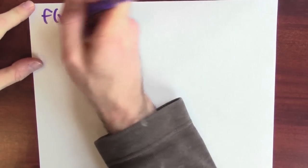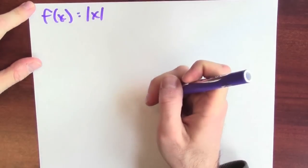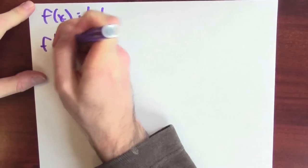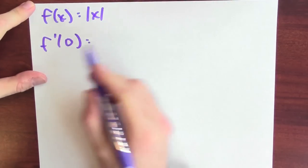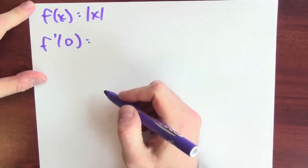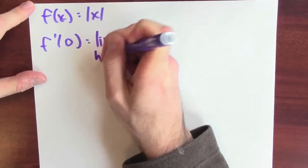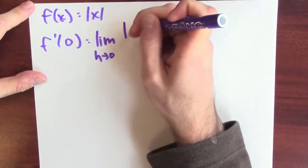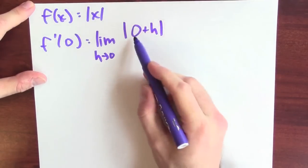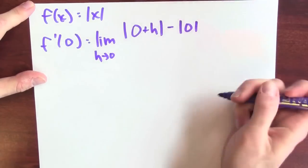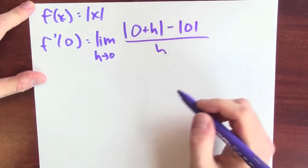So, I'm just going to name the absolute value function f for the time being. What I'm trying to calculate is the derivative of f at zero. I want to know, is this function differentiable at zero? By the definition, that derivative is the limit as h approaches zero of the function at zero plus h minus the function at zero over h.